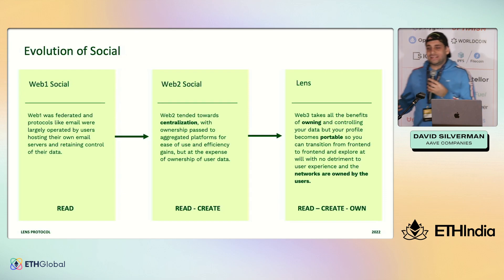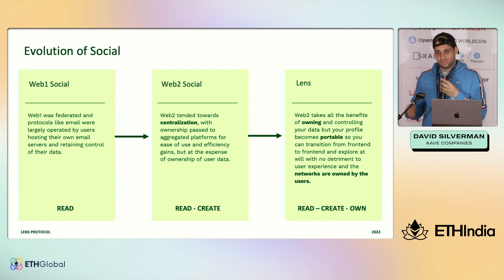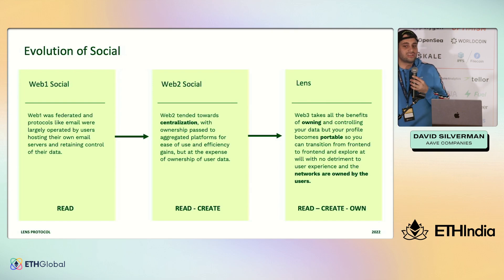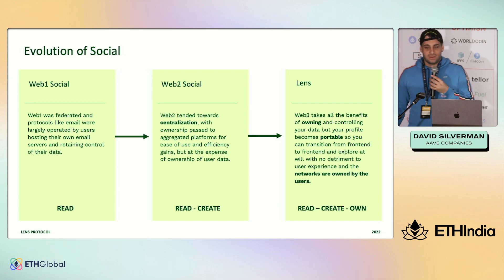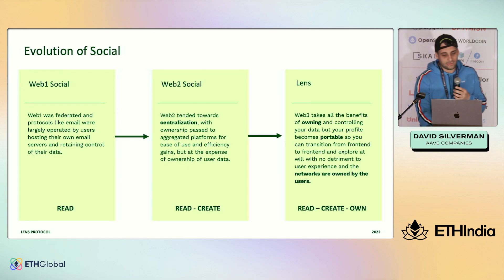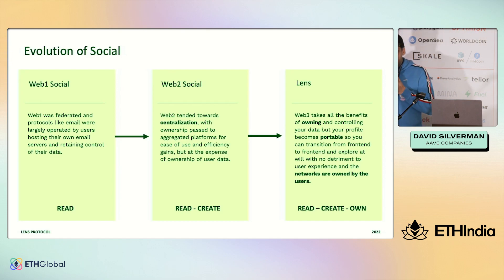In Web3, in a Lens application, which is fundamentally different, you are not just authenticating with the application, but you are bringing the identifier so that it can find your data, so you can bring it your data. I sign into an application by bringing it data, and then and only then can it render experience. The data is in a more public area, which means it is forkable. I can switch experiences at will.